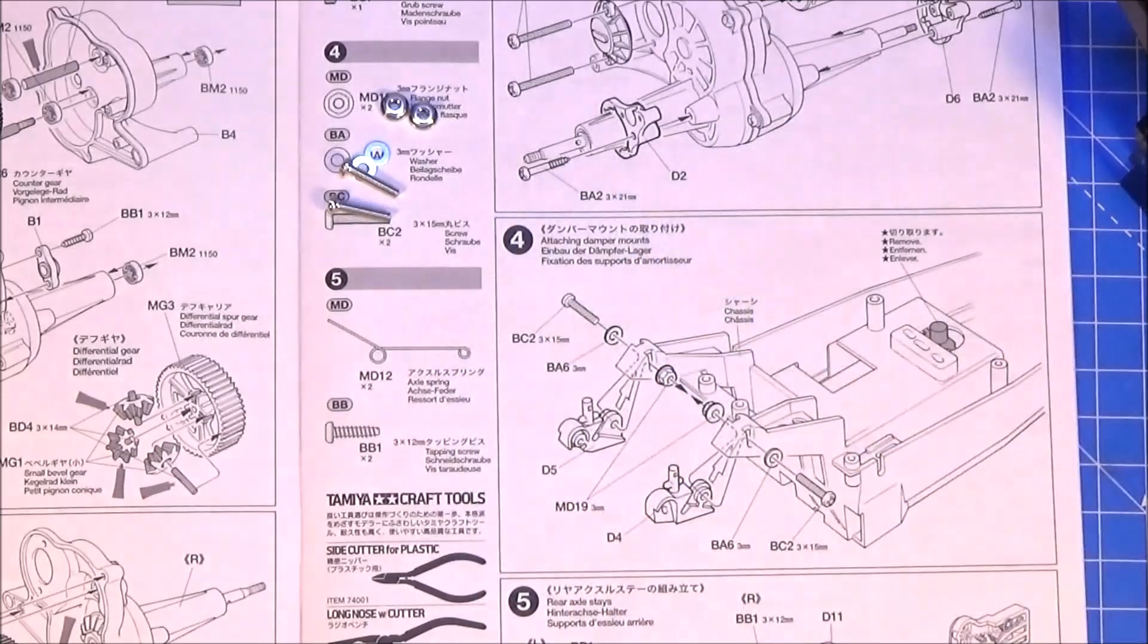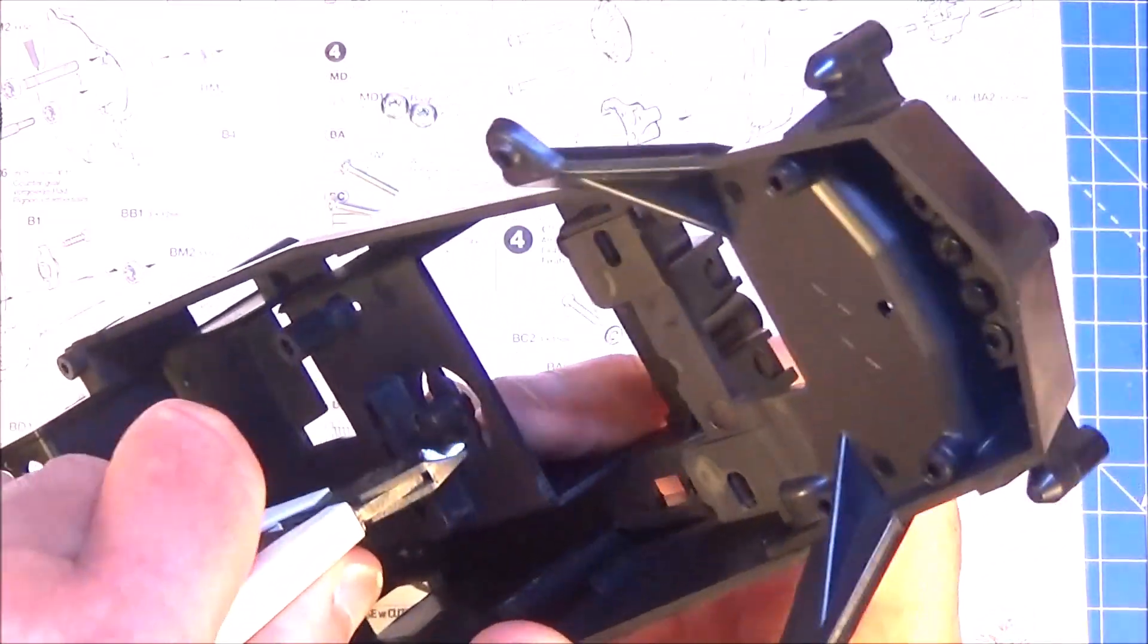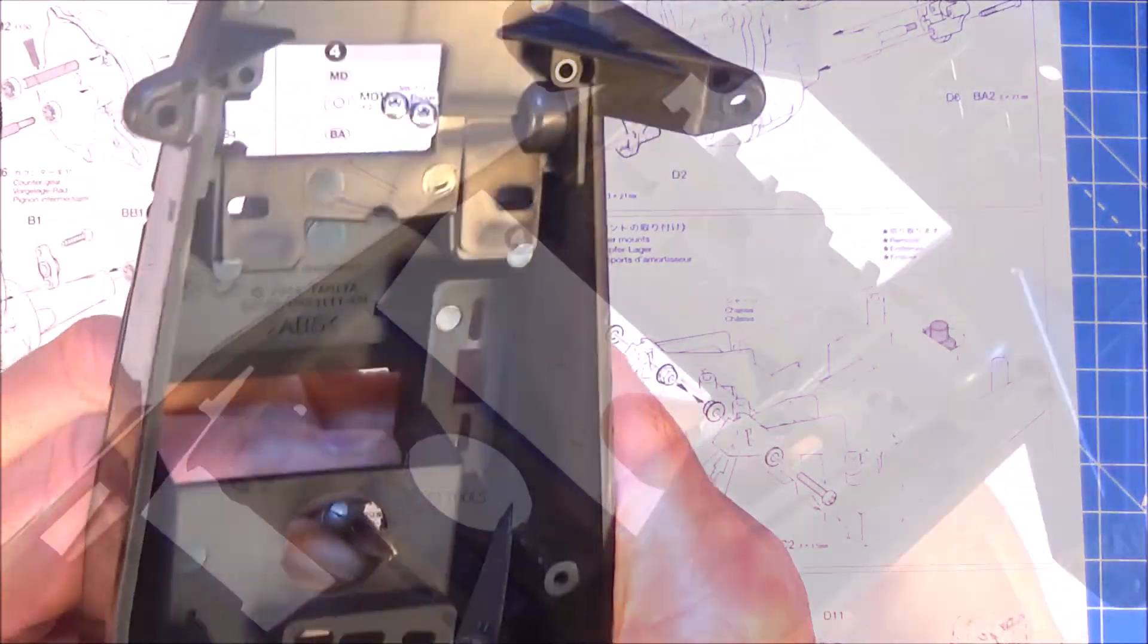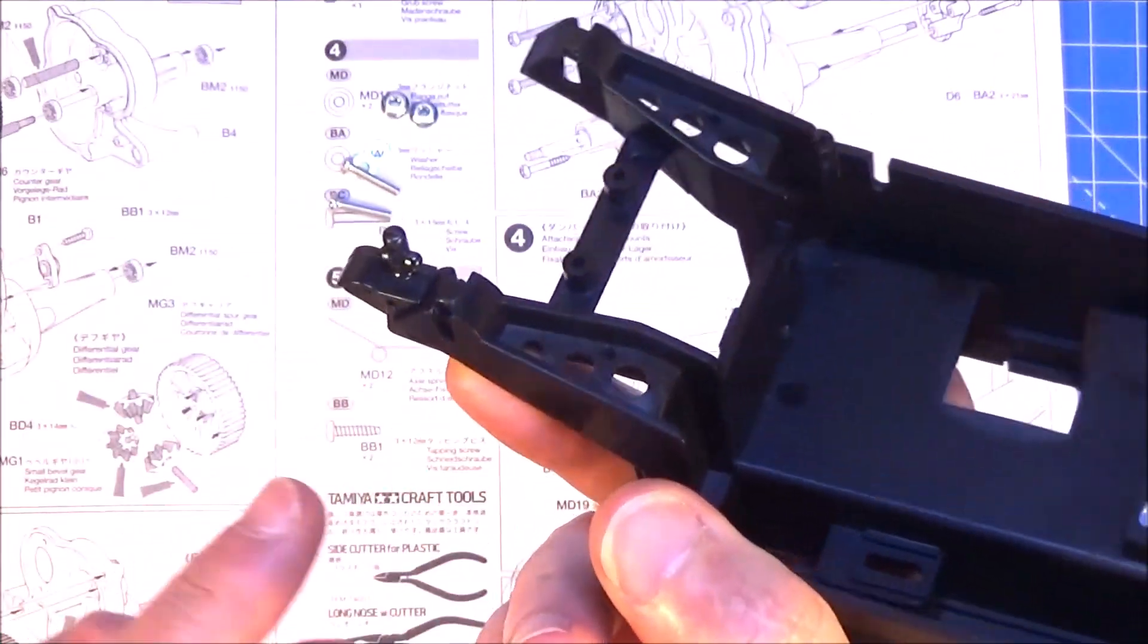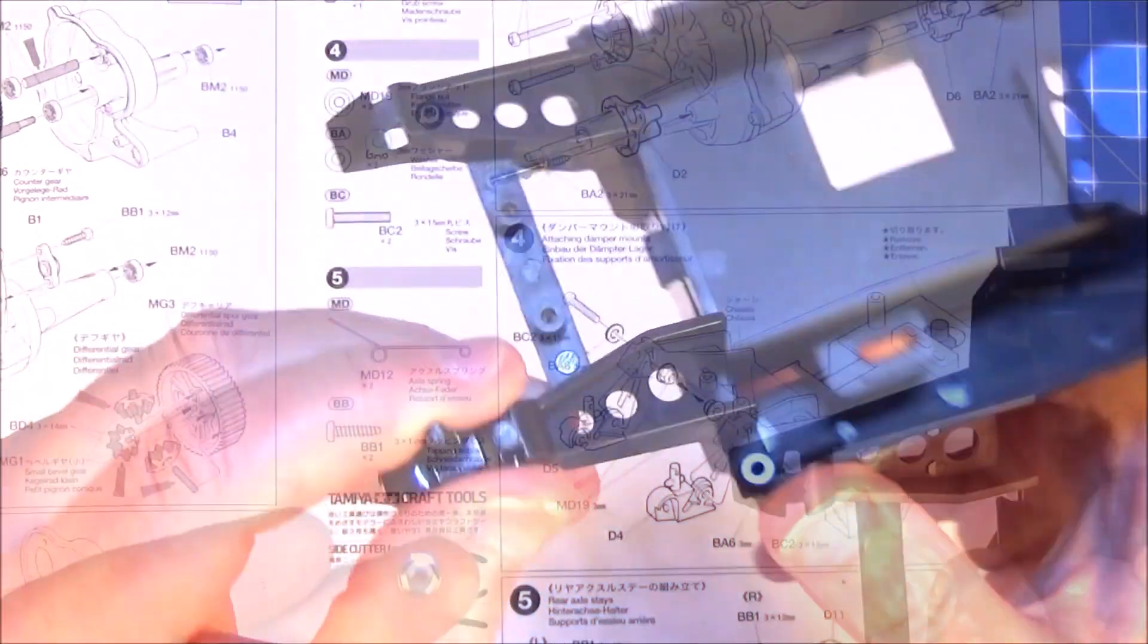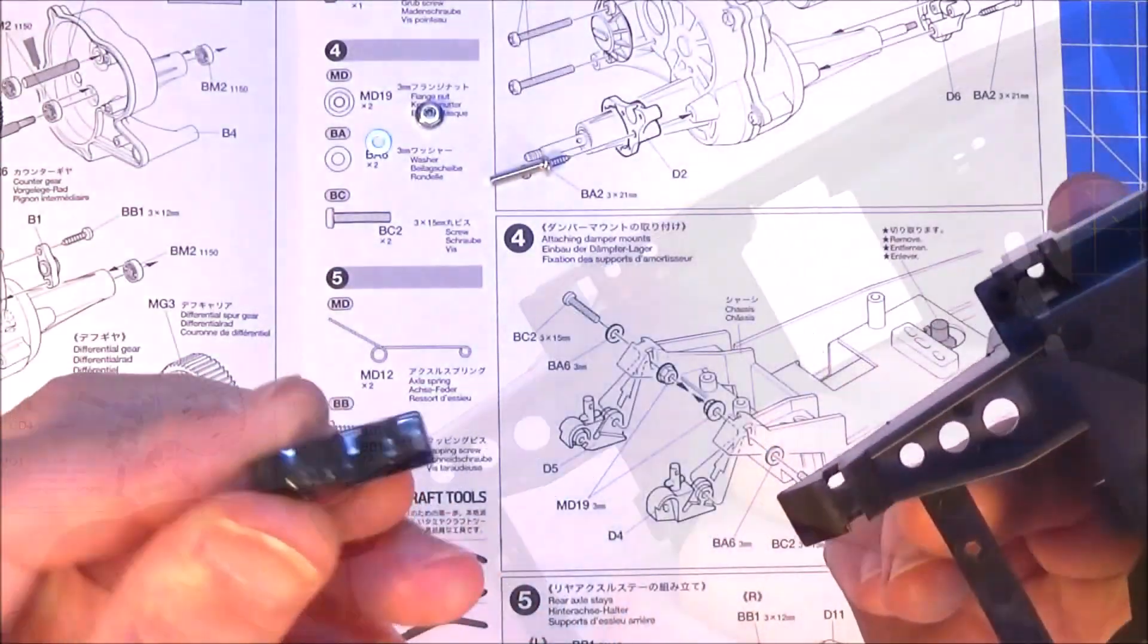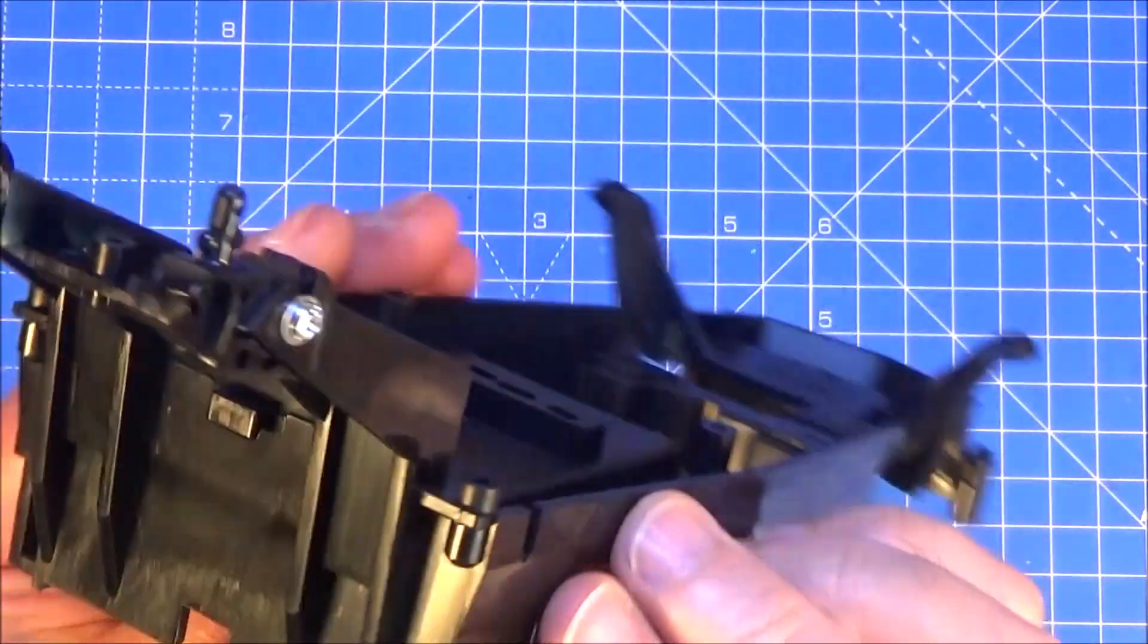Step four is attaching the damper mounts and time to get your chassis out. And as it shows here, we've got to chop out this little bit of plastic here in the middle. It's just from the moulding process, I think. Just give it a trim up with the knife. Then get plastic part D4 and that just slots up into that housing there. It's a 3x15 screw and a 3mm washer. Pop that through the hole and simply affix with a flange nut. Obviously 3mm. And then do exactly the same with part D5 in the other side. And it should look like this when you're finished.